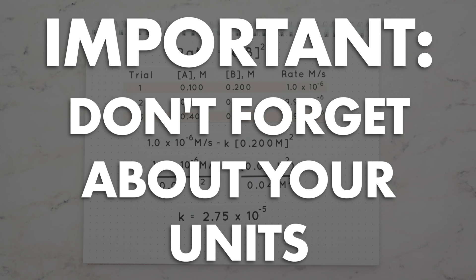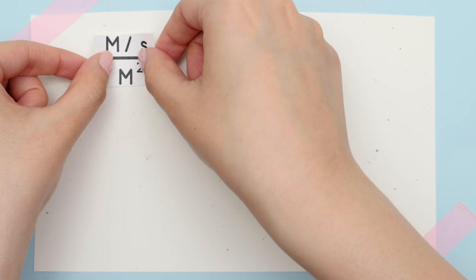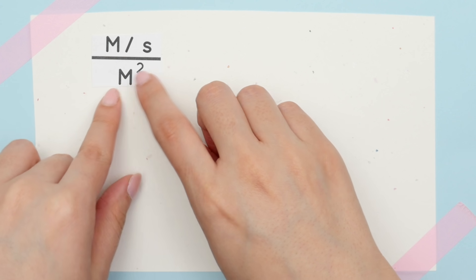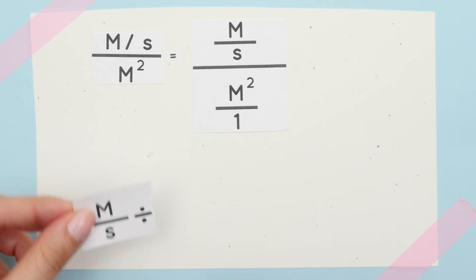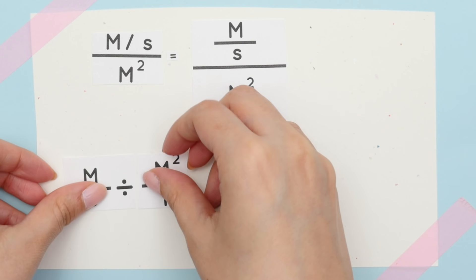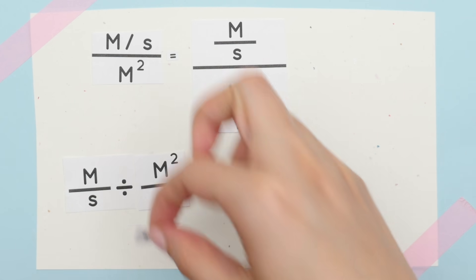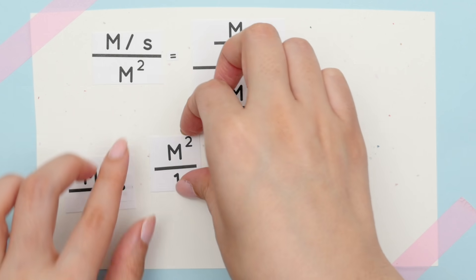You know I always see students getting marked off for these units, so let's find our units separately. This is where we left off. This m squared is actually divided by 1 and can be rewritten as such. So we are dividing fractions. When dividing fractions you must multiply by the reciprocal of the second fraction.